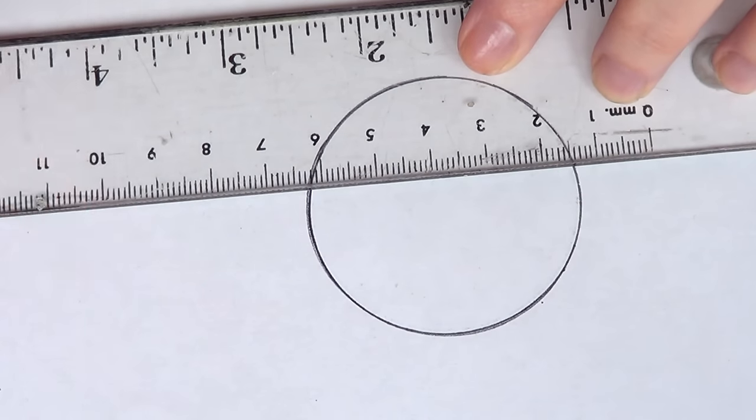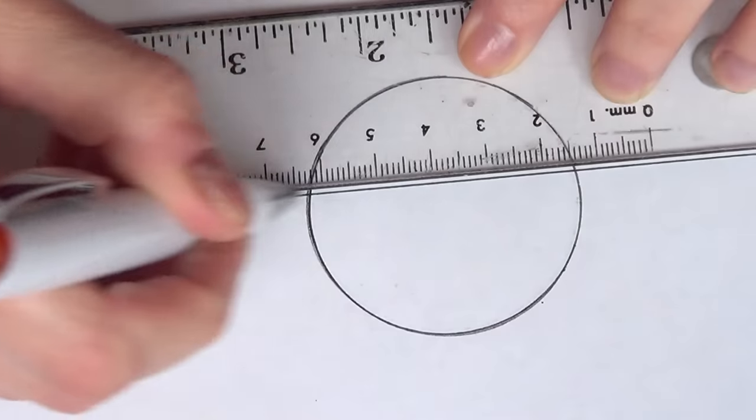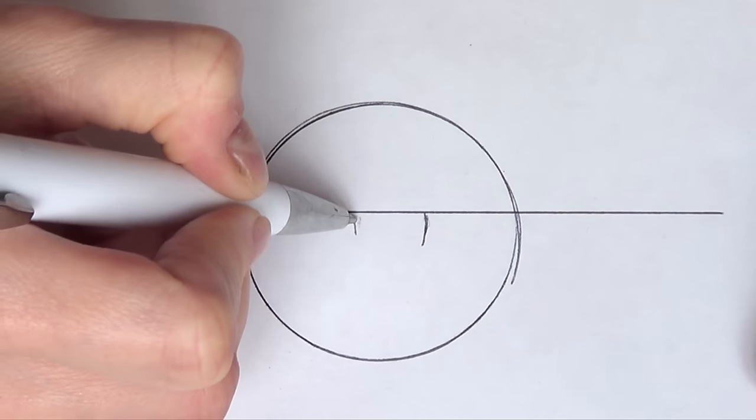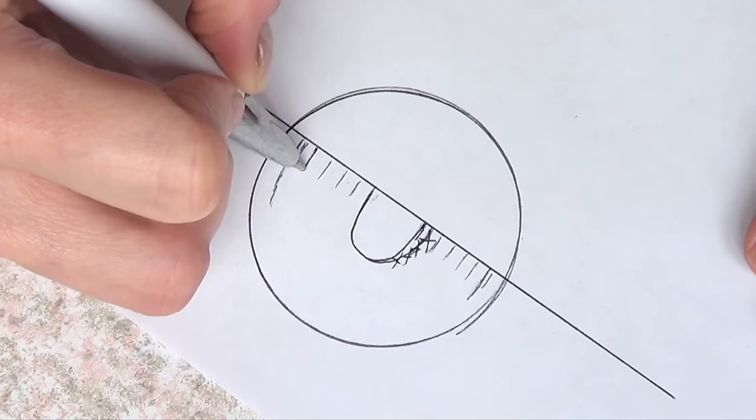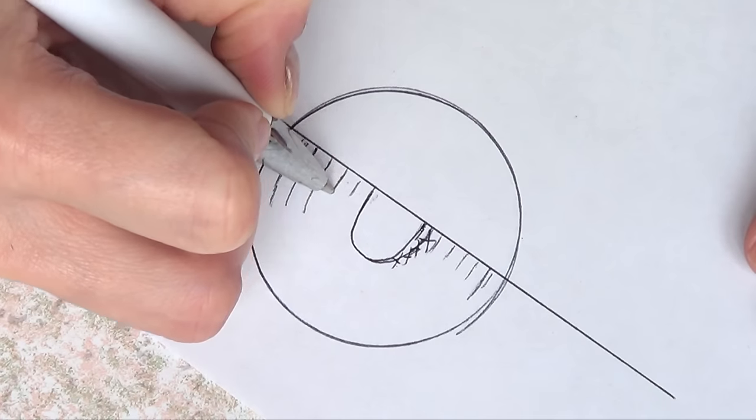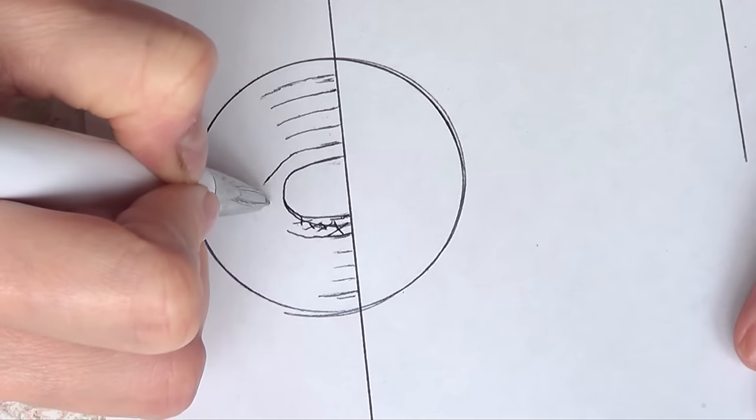For that, I'm going to part my circle in not even half but more to one side than the other, and then I'm just going to mark the lines. Remember that there are six colors, so just keep that in mind.